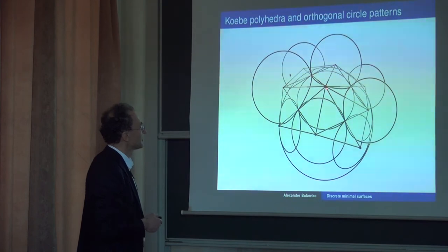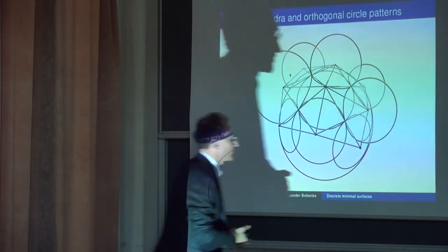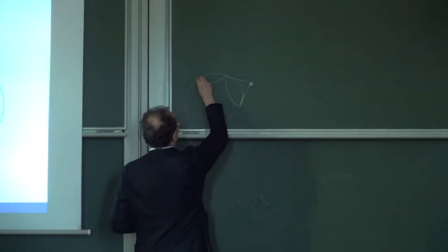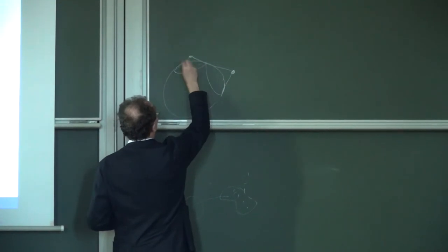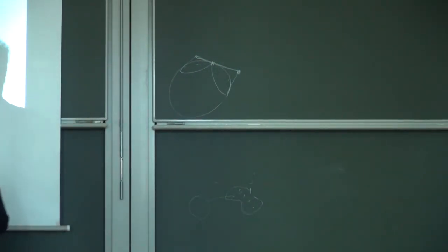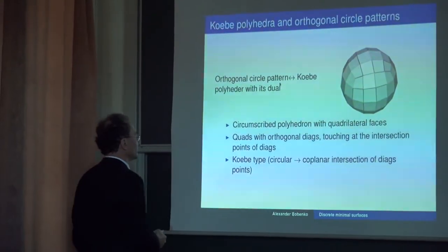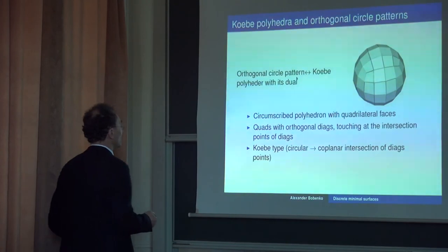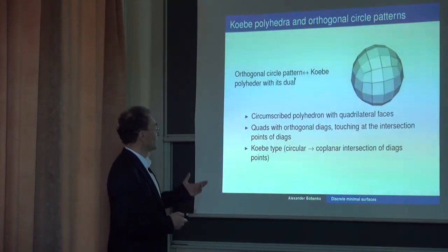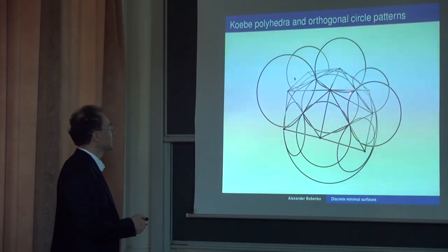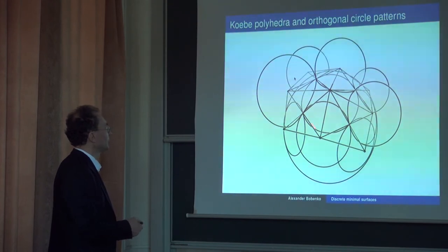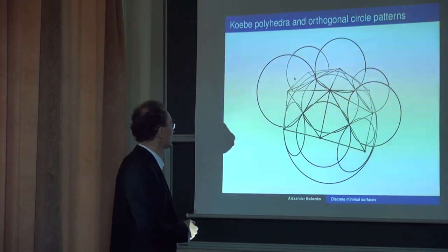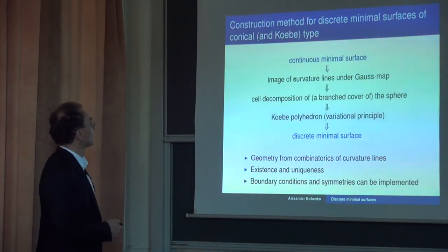This edge is orthogonal to the other edge — they form a quadrilateral with orthogonal diagonals, and at the intersection point the quadrilateral touches the sphere. So you end up with a polyhedron that is circumscribed and built out of quadrilaterals. An important fact is that this quadrilateral is of Kerby type — the planarity condition is satisfied because these four points lie on a circle and are therefore coplanar.